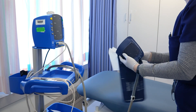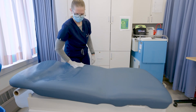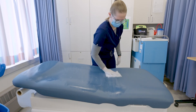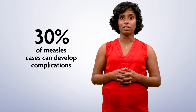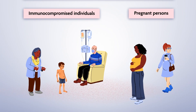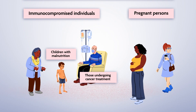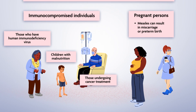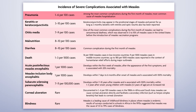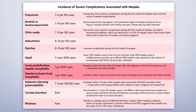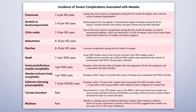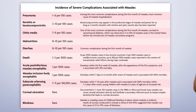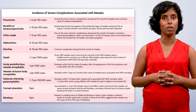In the office setting, one may need to wait up to two hours to cleanse the office after a known case has presented, given how infectious measles can be. While most cases are self-limiting, about 30 percent of measles cases can develop complications. Pregnant persons and immunocompromised individuals — including malnourished children, those undergoing cancer treatment, and those with HIV — are particularly vulnerable. For pregnant persons, measles can result in miscarriage or preterm birth. Five out of 100 individuals will be hospitalized for pneumonia; one in 1,000 may die; one in 1,000 may develop encephalitis.